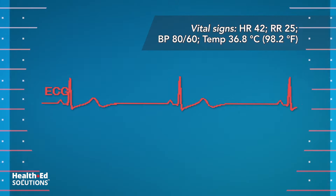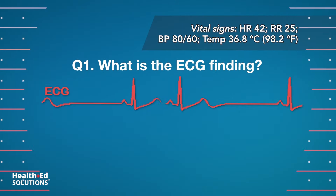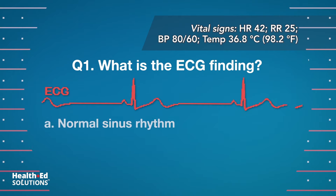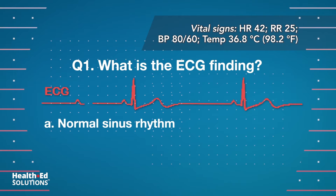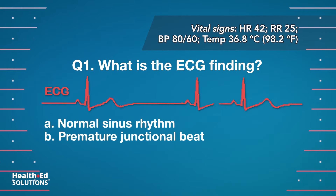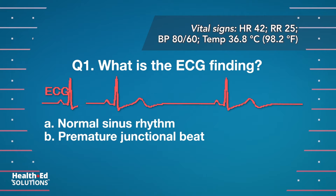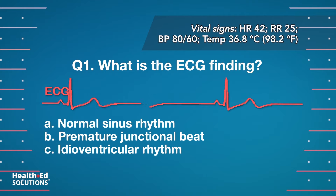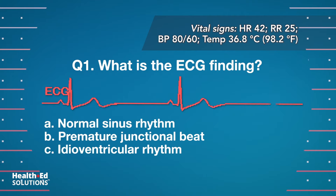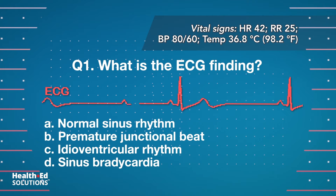Question 1: What is the ECG finding? A. Normal sinus rhythm. B. Premature junctional beat. C. Idioventricular rhythm. D. Sinus bradycardia.